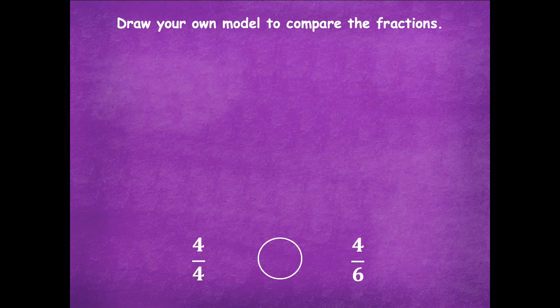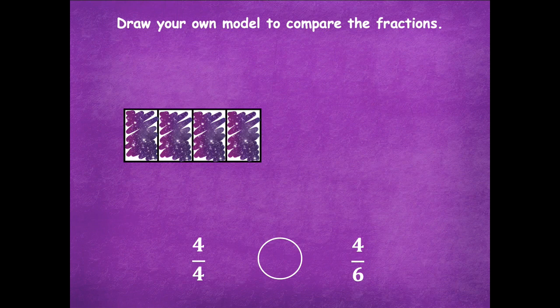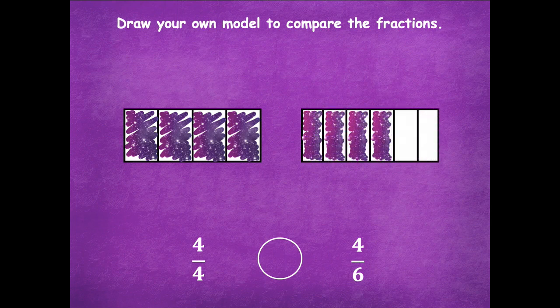Here are my two models. Four fourths has four parts and all four are shaded. My next model has six equal parts and four are shaded. Looking at the model on the left, all parts are shaded — that's one whole. So four fourths is greater than four sixths. Good job on that one!